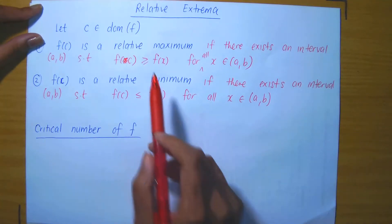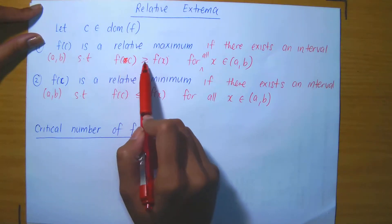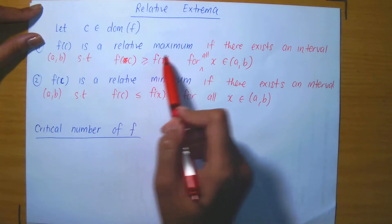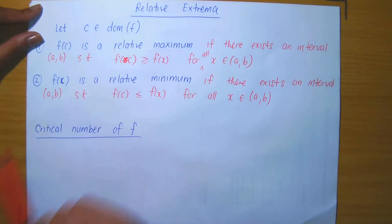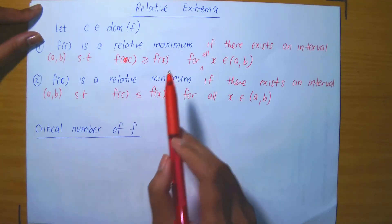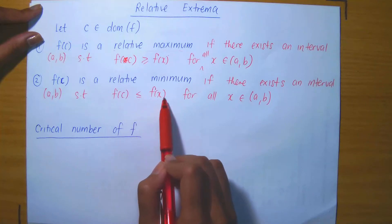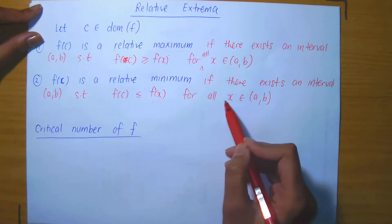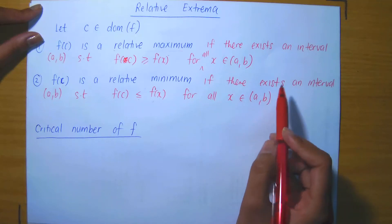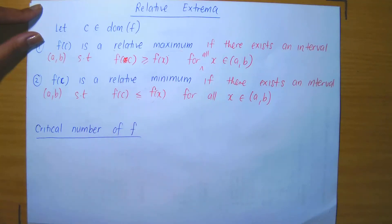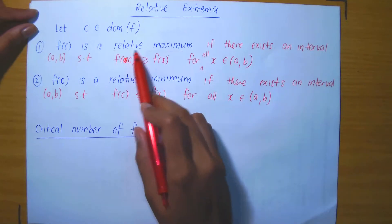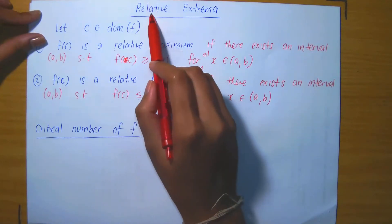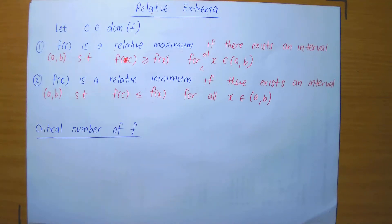In particular, if f of c is greater than or equal to f of x for all x in the domain of the function, then we don't just call it a relative maximum — we call it an absolute maximum. Similarly, if f of c is less than or equal to f of x for all x in the domain and not just some open interval, then we call it an absolute minimum. The relative maximum or relative minimum is sometimes referred to as relative extrema.